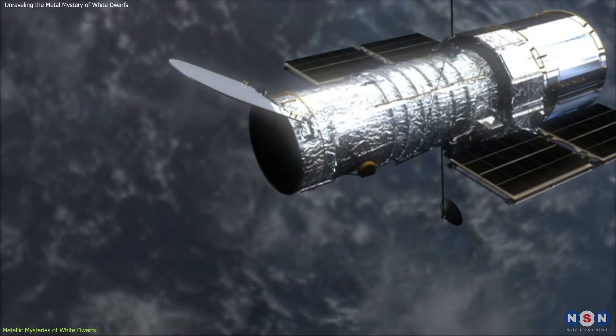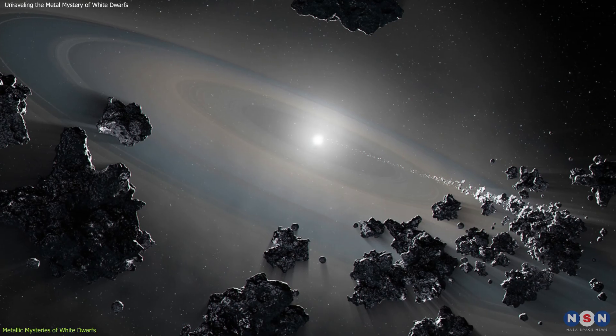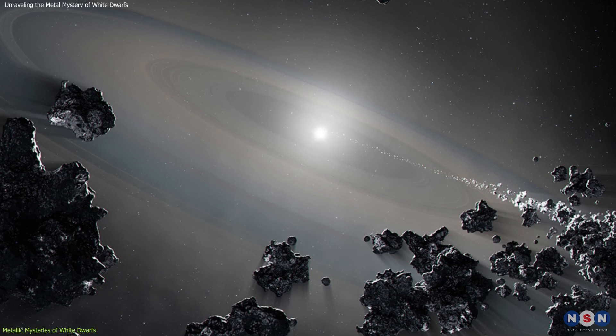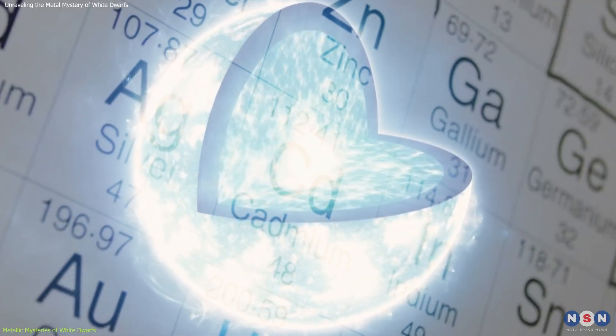Observations, such as those from the Hubble Space Telescope, indirectly confirm this by revealing discs of material around some white dwarfs, suggesting a continuous supply of metals.